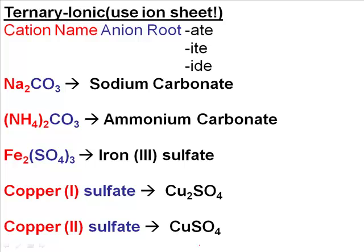So we've got binary covalent compounds, where we always use prefixes. We've also got ionic compounds, and with ionic we never use prefixes — unless they're already in the name. Don't ever intentionally add a prefix to an ionic compound. We know there are binary ionic compounds.